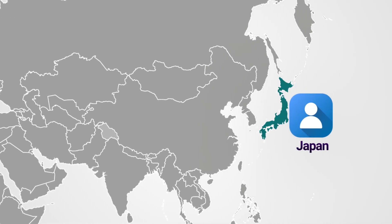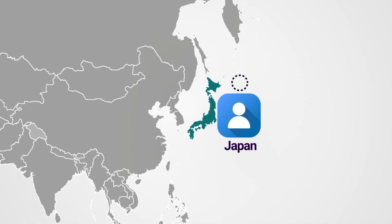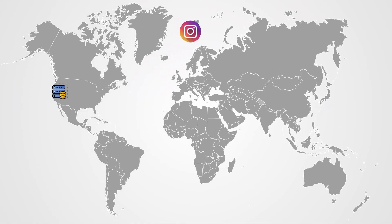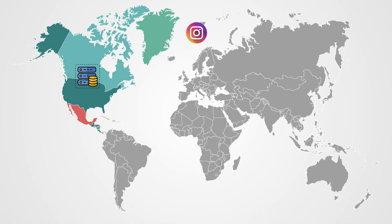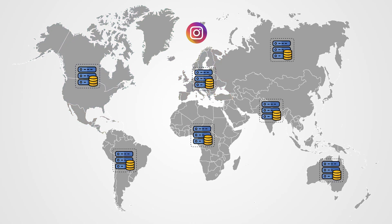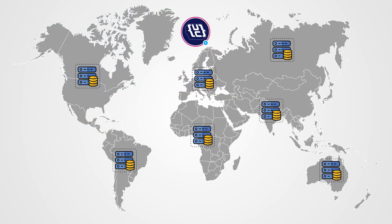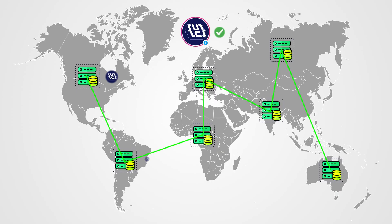If Instagram had only one server in California, users in Japan would experience terrible loading times. So instead, they have servers in North America, Europe, and everywhere else, all storing copies of the same data. When you update your profile picture, that change needs to sync across all these servers so anyone anywhere in the world sees your new picture. For the most part this works pretty well, but it can take some time and does come with some extra complexity.